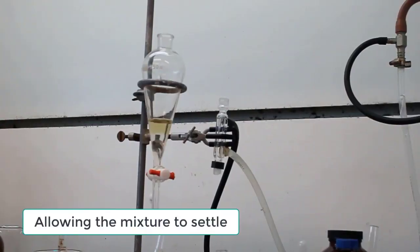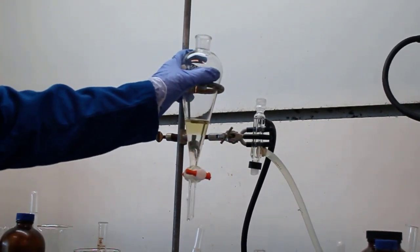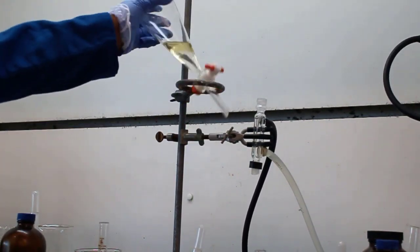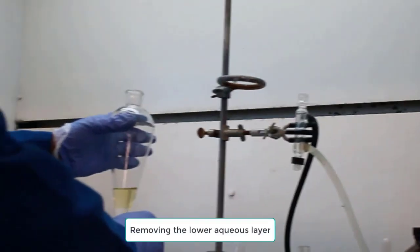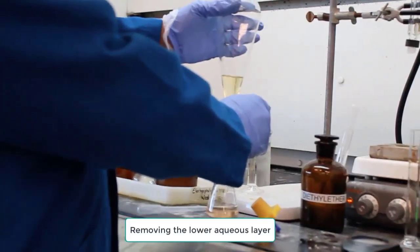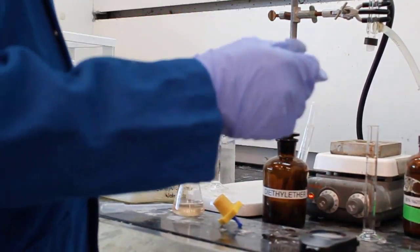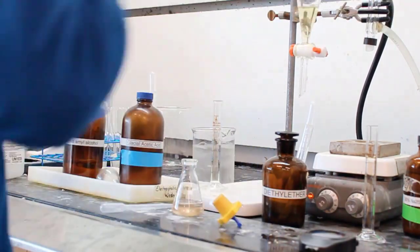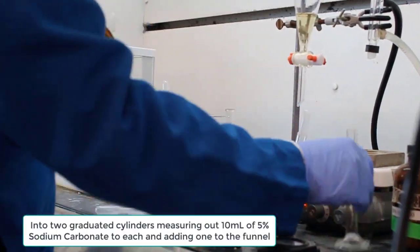Now adding 10 milliliters of water again. Mixed it and allowed it to settle. So yet again, our bottom layer here is going to be the aqueous layer. So letting that out. This yellowish tinted colored solution, that's our diethyl ether that's got our product in it, and any reactants that didn't make it into the water.